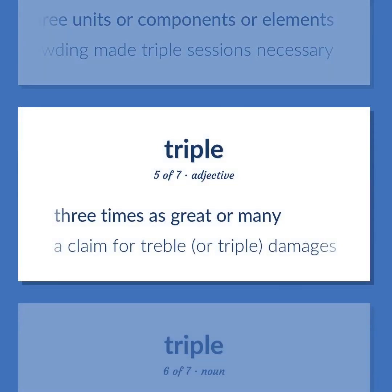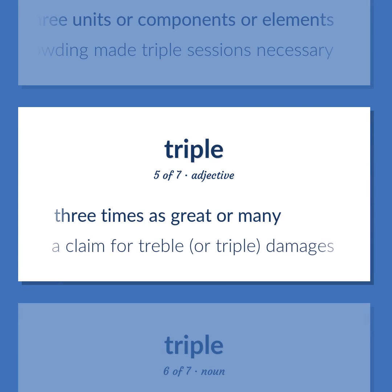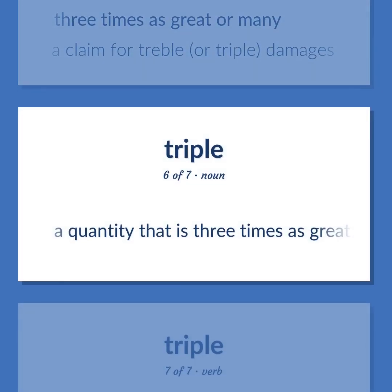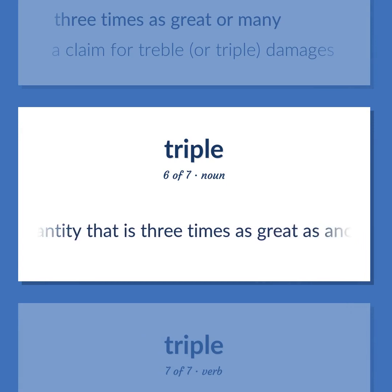Triple: Three times as great or many. A claim for treble, or triple, damages. A quantity that is three times as great as another.